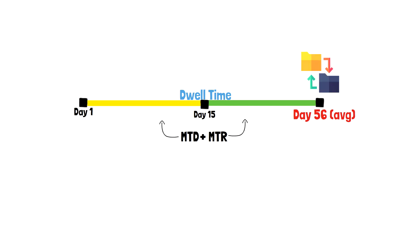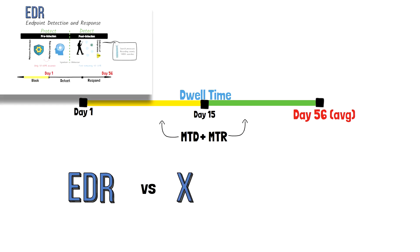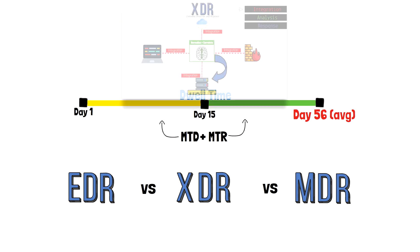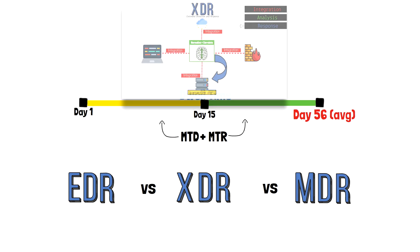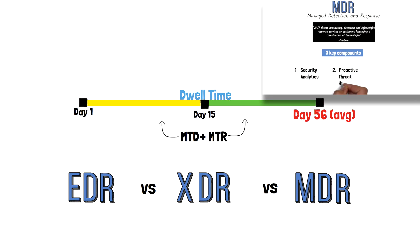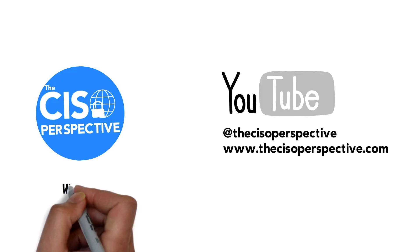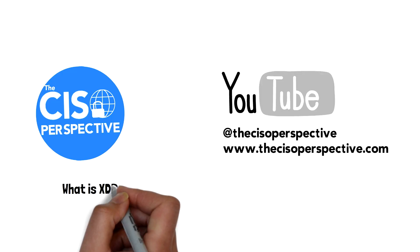EDR and XDR are tools that attempt to shorten that dwell time by detecting and responding to threats quicker. While EDR focuses on detection and response at the endpoint level, XDR expands on that to include other critical areas of our network like our firewall and cloud applications. In this video, we'll take a look at what exactly EDR and XDR do and how MDR uses these technologies to provide a service.